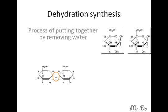Dehydration synthesis is a process of putting together by removing water. So the picture on the right, we have two glucose and when you remove them, it leads to the picture on the left. Water was removed and they were put together.